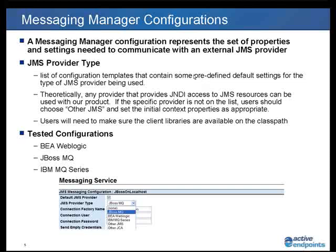We know what the URL needs to look like and we'll provide a sample for it. So for our tested configurations we would have a drop-down. But that doesn't mandate that — you're not restricted to those particular configurations. Theoretically any provider that supports JMS 1.1 and is accessible via JNDI lookup can be used. In that case you'd want to choose 'other' and set up the properties as appropriate for that particular provider.